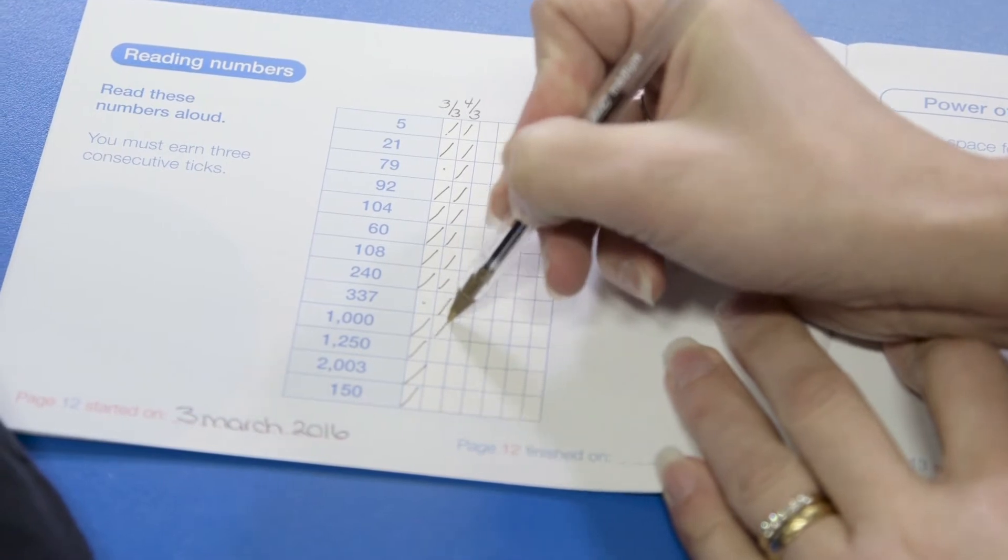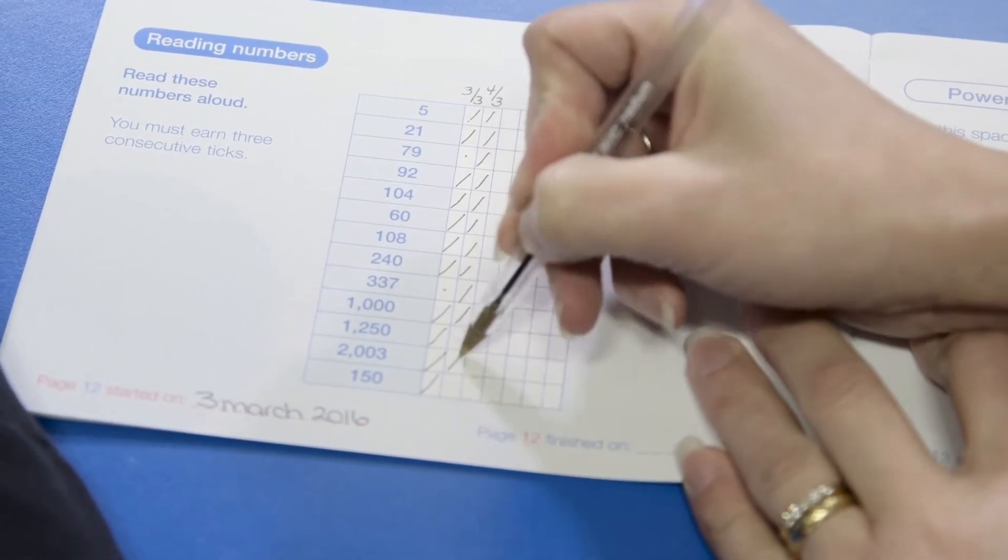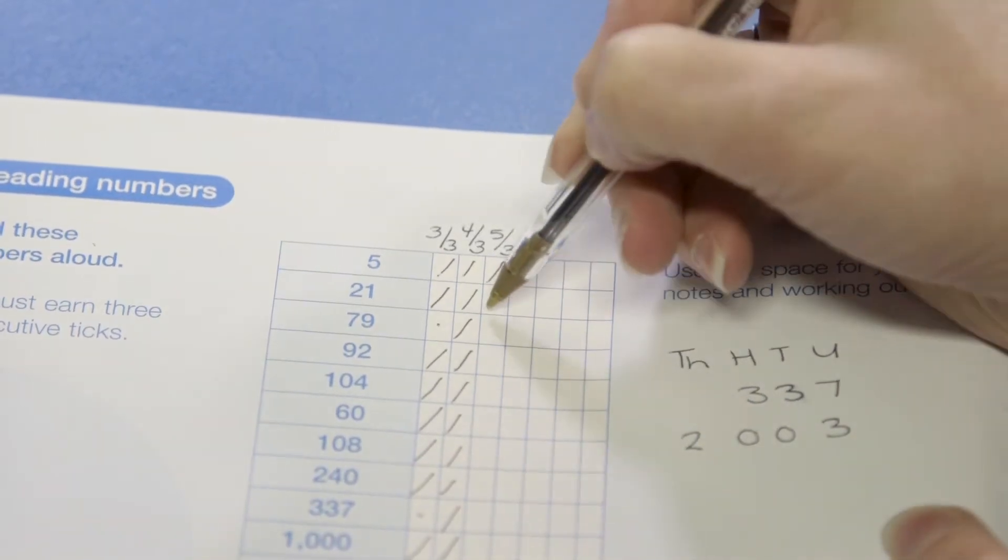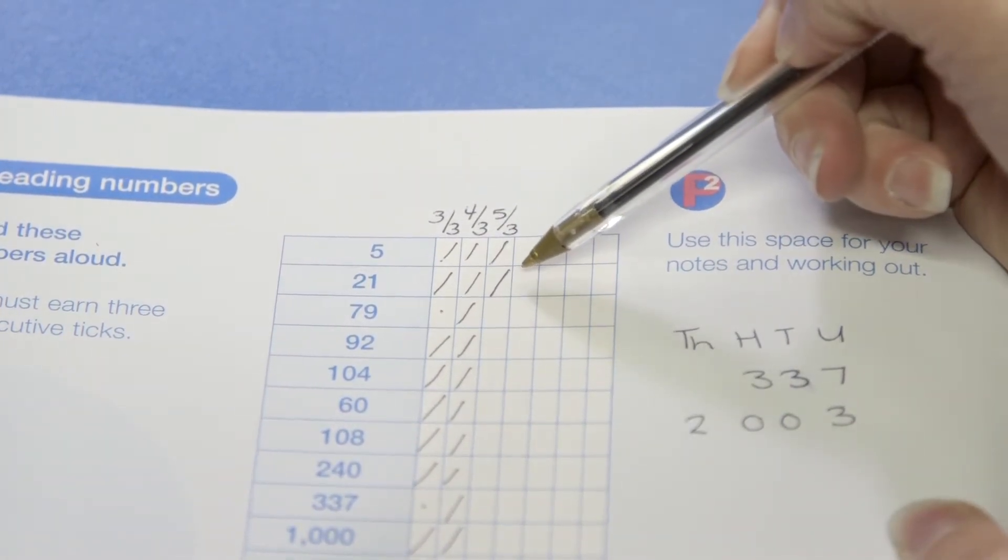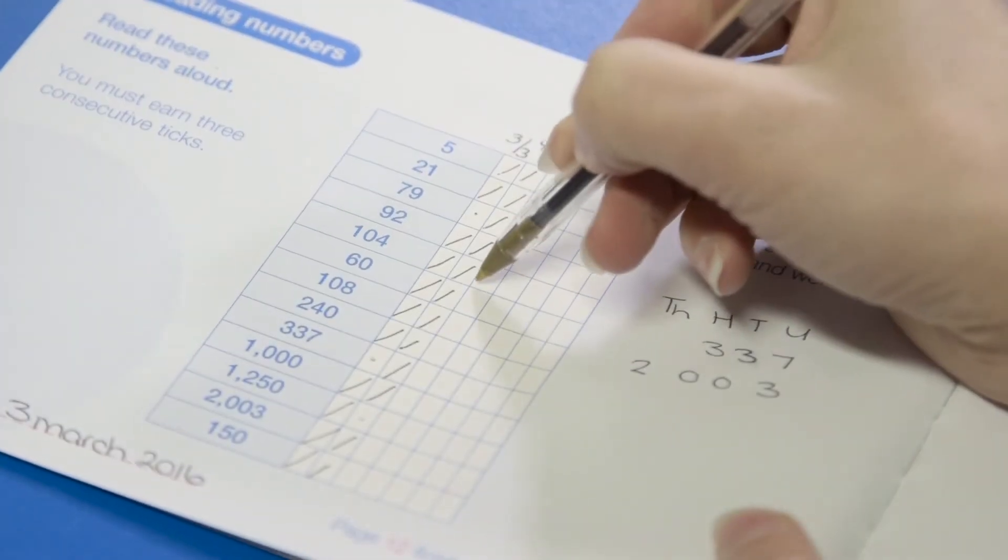When you have three consecutive ticks for a question, that question is now complete. There's no need to ask that question again. Some questions may have dots, so continue to return to these questions until they've also got three consecutive ticks.